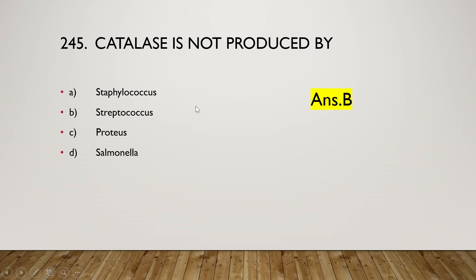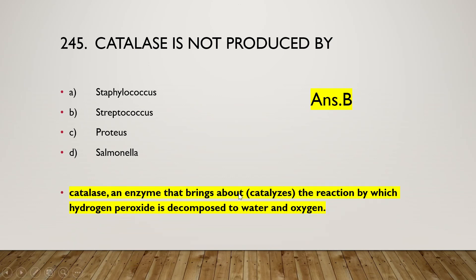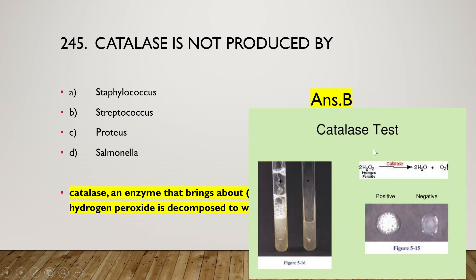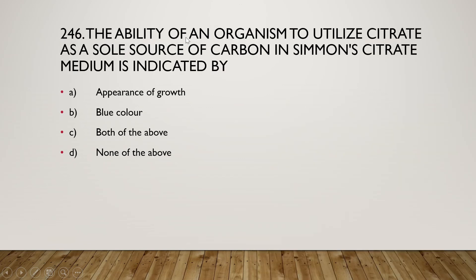Next question: catalase is not produced by Staphylococcus, Streptococcus, Proteus, or Salmonella? The right answer is option B — catalase is not produced by Streptococcus. Catalase is an enzyme that catalyzes the decomposition of hydrogen peroxide to water and oxygen. In the catalase test, if the organism has catalase it produces bubbles when hydrogen peroxide is added to the culture — a positive result.